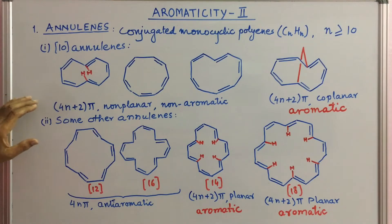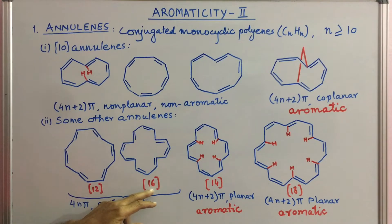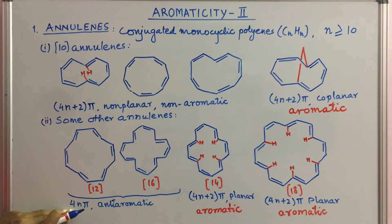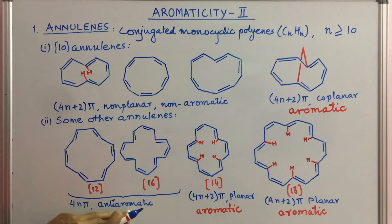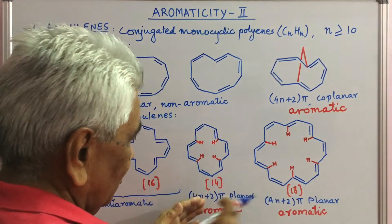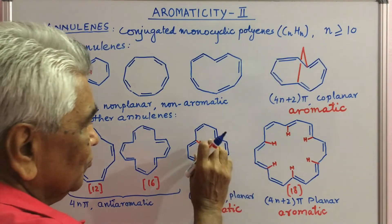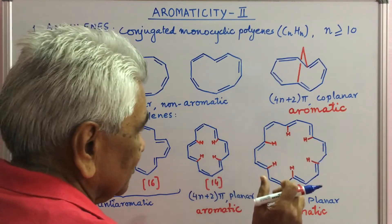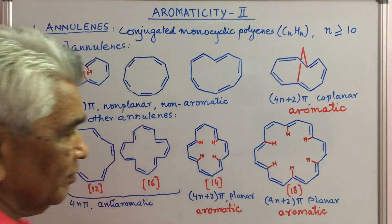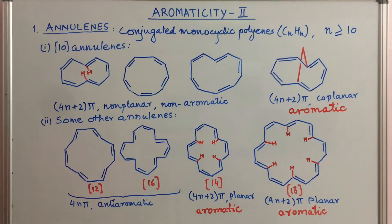When we talk about other annulenes — 12-annulene and 16-annulene — they have 4n pi electrons. As I mentioned in the last video, when these electrons are present they are anti-aromatic, so these two compounds are anti-aromatic. On the other hand, 14-annulene and 18-annulene are 4n+2 pi electron systems; the hydrogens here do not interfere with each other because of the distance, and they are planar and aromatic.